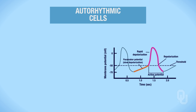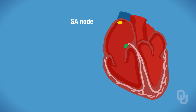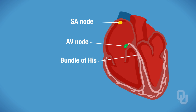The other cardiac cell types are called autorhythmic cells, which are also called pacemaker cells. There are fewer pacemaker cells in the heart when compared to cardiac contractile cells. The autorhythmic cells are located in the conduction fibers, which make up the conduction system. Thus, you would find autorhythmic cells in the SA node, the AV node, the bundle of His, the right and left bundle branches, and the Purkinje fibers.